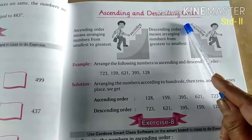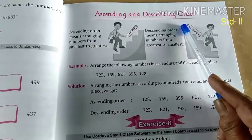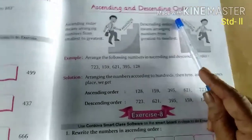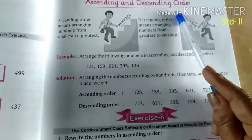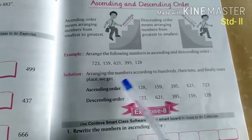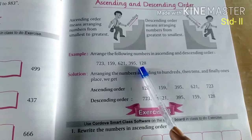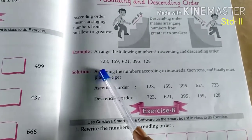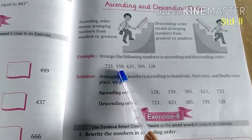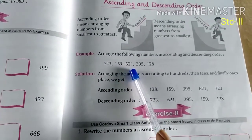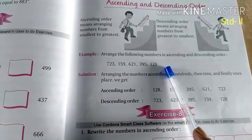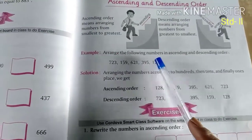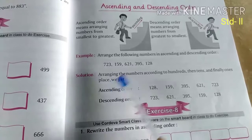Ascending and Descending Order. Now which is the Ascending Order means what? Smallest to Biggest. The smallest number is 128,